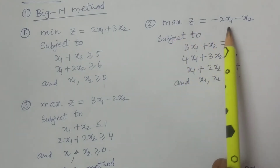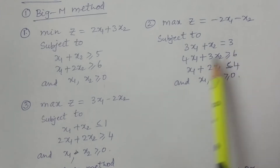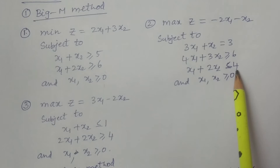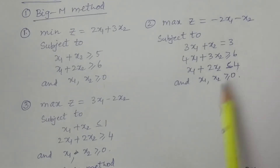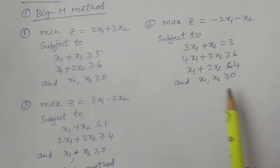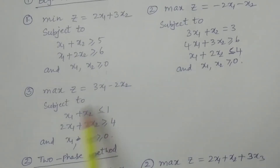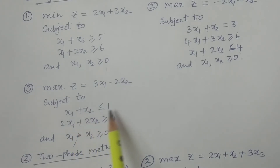Problem 2: maximize z = −2x1 − x2, subject to 3x1 + x2 = 3, 4x1 + 3x2 ≥ 6, and x1 + 2x2 ≤ 4. In the standard simplex method only ≤ constraints are used, but in the Big M and two-phase methods we can handle any constraints — ≥, ≤, or =. Problem 3: maximize z = 3x1 − 2x2, subject to x1 + x2 ≤ 1, and 2x1 + 2x2 ≥ 4.